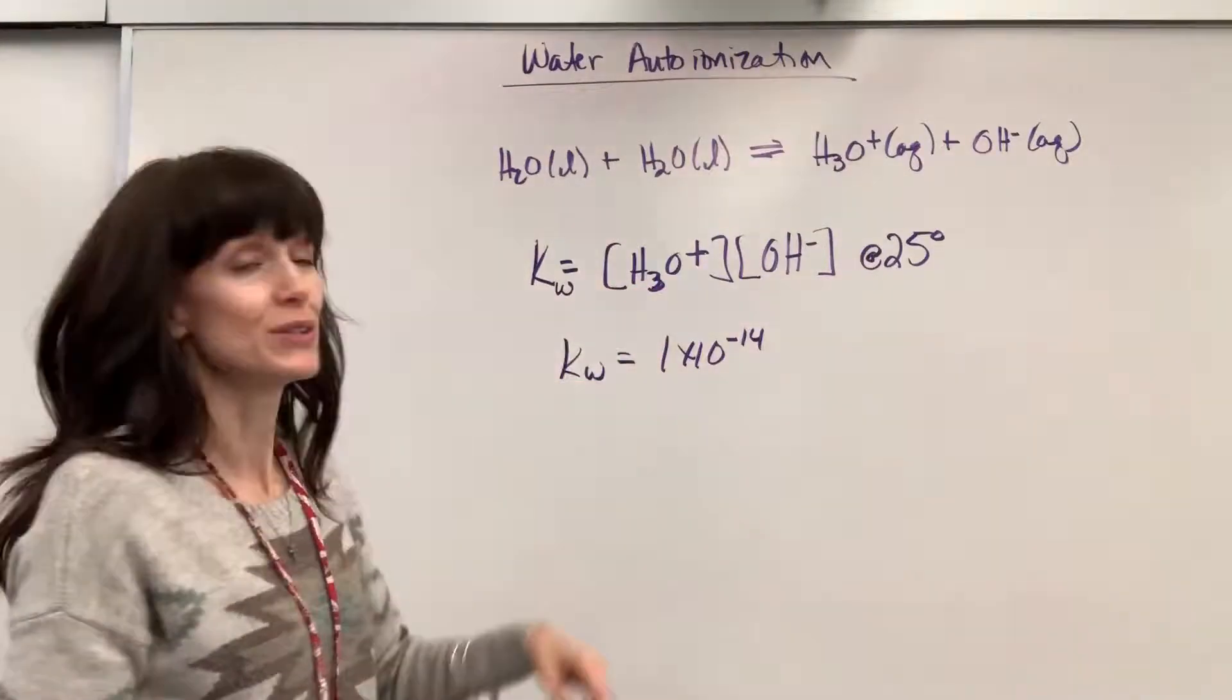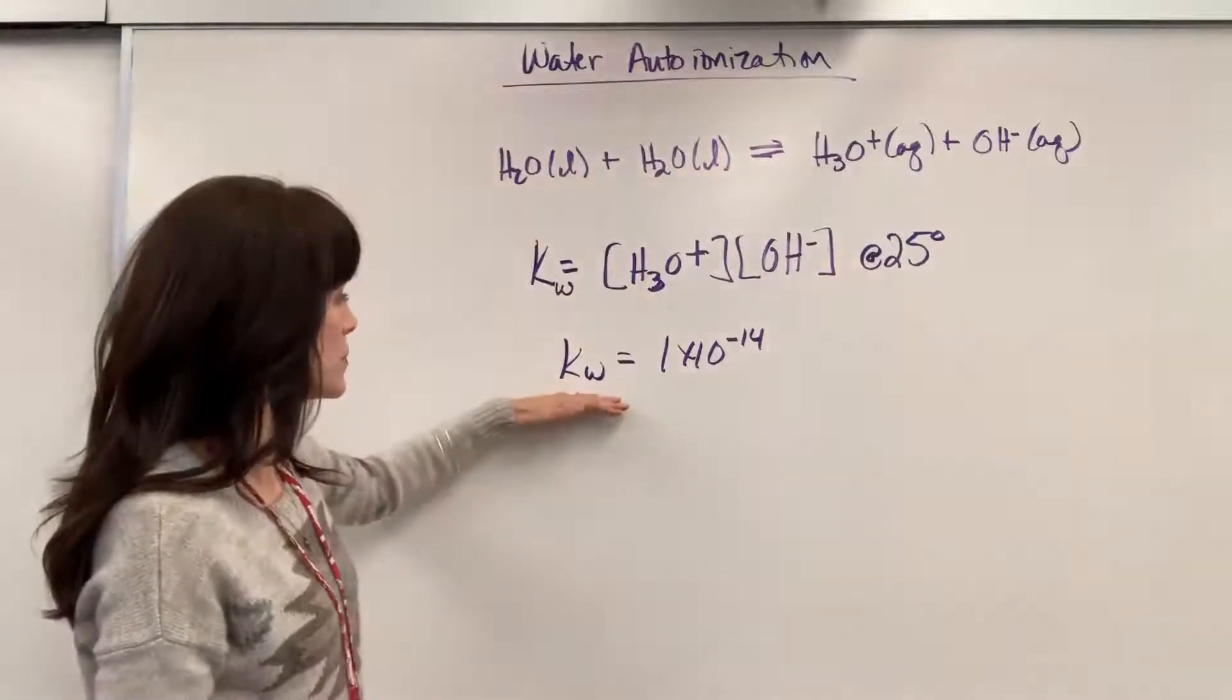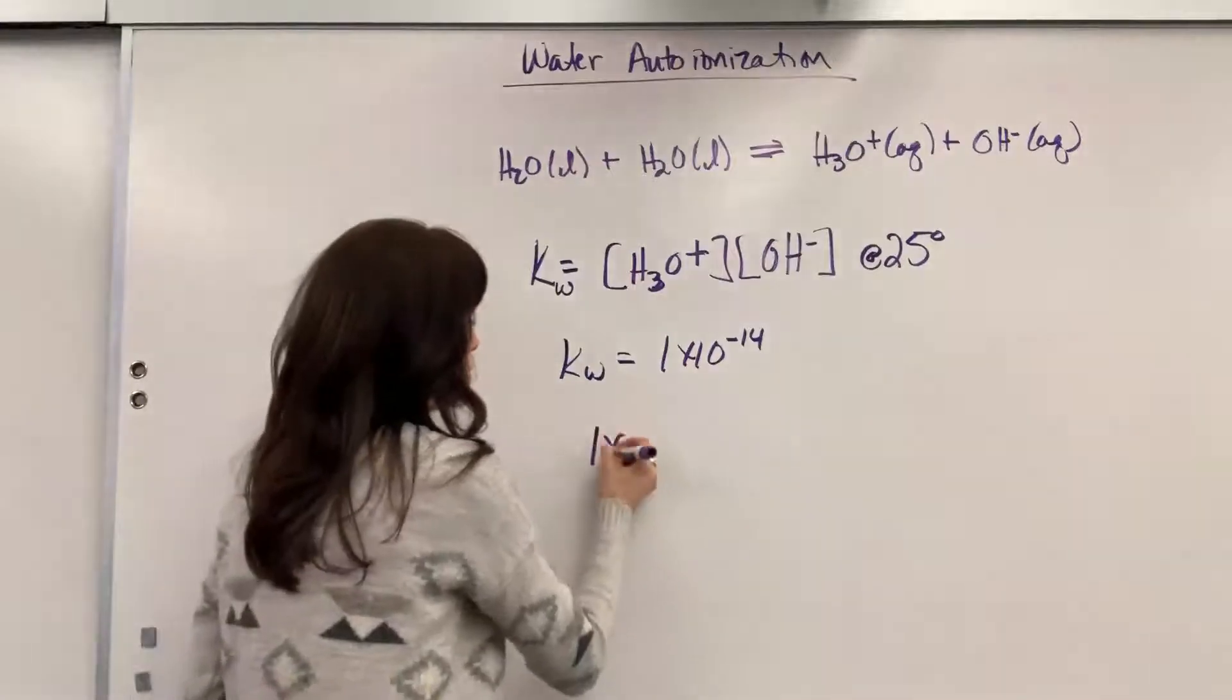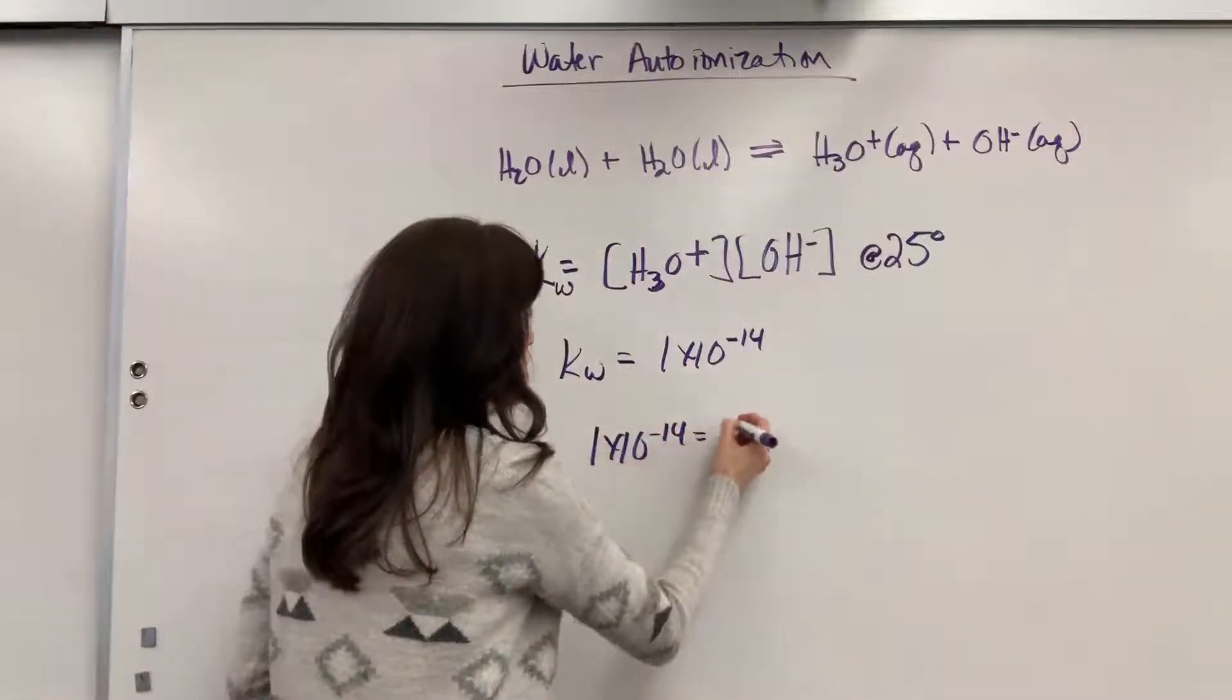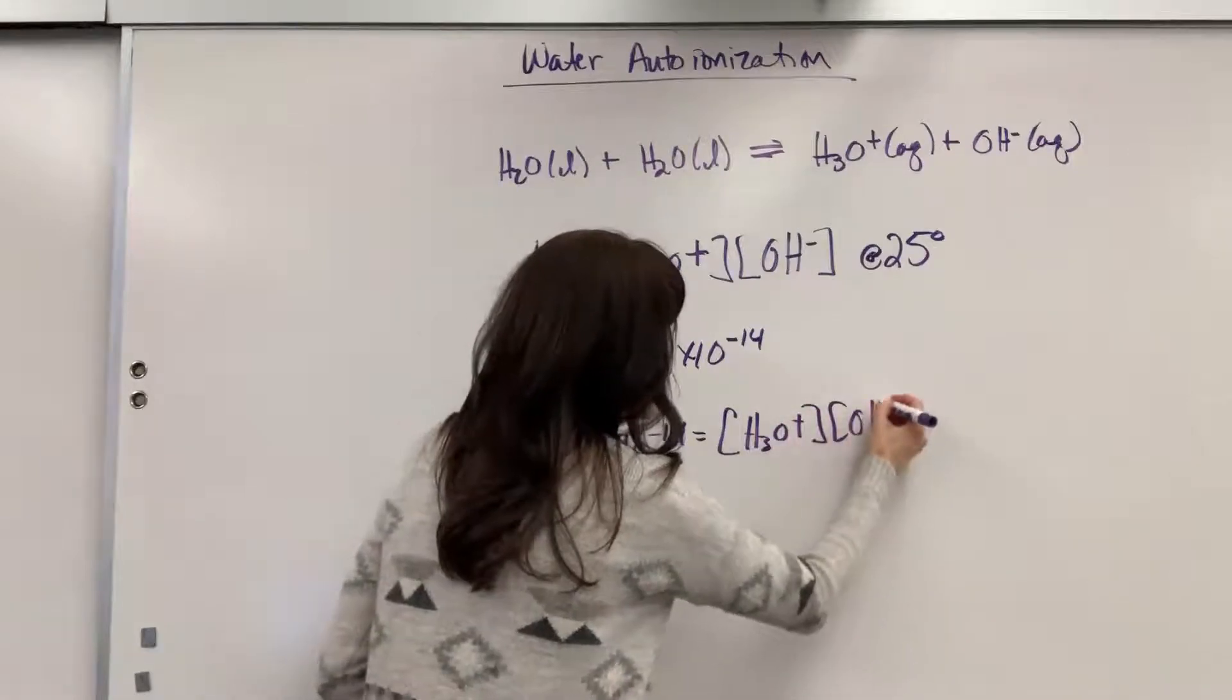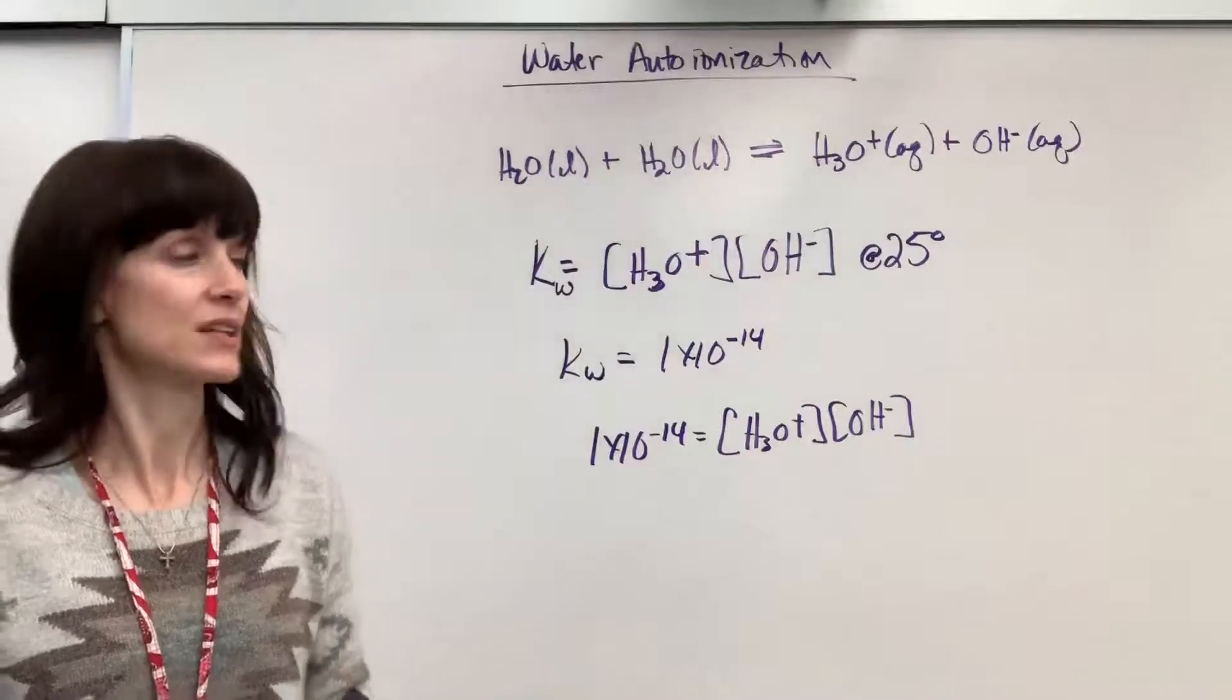Now this, you'll be able to use this formula, that you know K-W always will be 1 times 10 to the minus 14, which means 1 times 10 to the minus 14 equals hydronium times hydroxide. You will be able to use that formula when you are doing pH calculations.